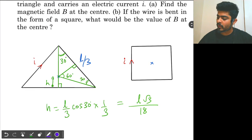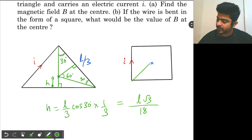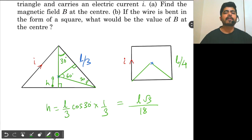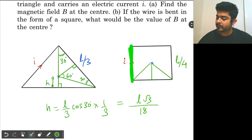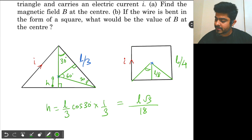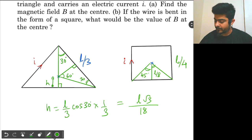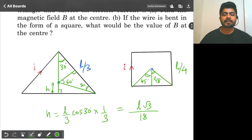Now we solve for the square for part B. For the case of a square, each side has a length L by 4. The perpendicular distance from the center to each side will be L by 8, since it is half of L by 4. This angle is 45 degrees and the other angle is also 45 degrees.